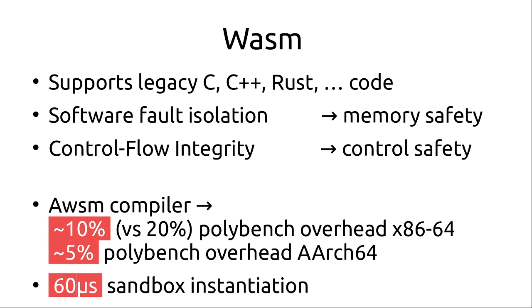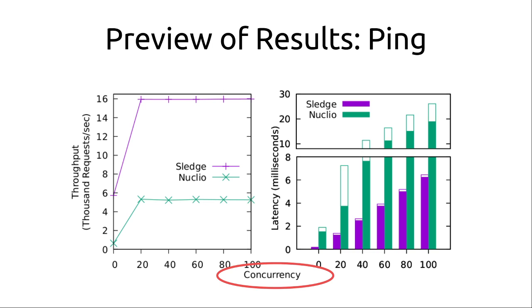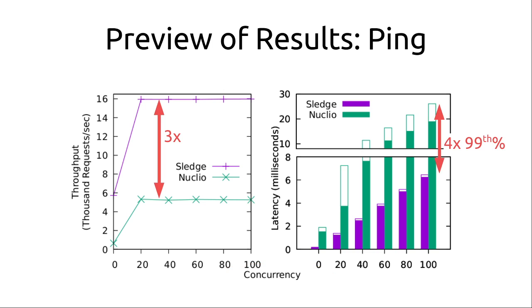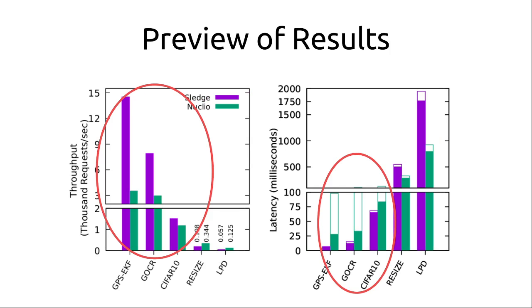The sandbox implementation enables sandbox instantiation very fast, on the order of about 60 microseconds. As we increase the density and concurrency of the system, we can see on the left that for throughput, we get about a 3x improvement over Nucleo, which is a container and process-based serverless runtime and one of the fastest out there. We also see a decrease in the 99th percentile latency by about 4x. This is on a ping serverless function — a very simple, fastest-possible benchmark. We also ran this with a few applications including a Kalman filter, some image processing, a neural network inference task, an image resize, and a computer vision-intensive license plate detection task.